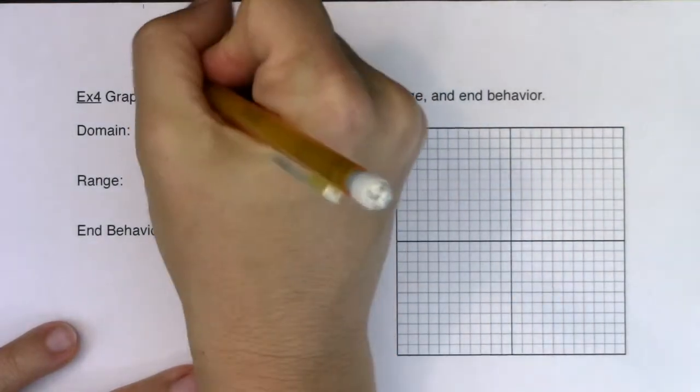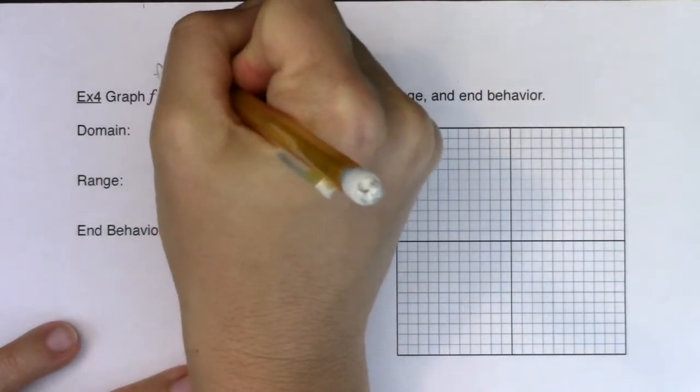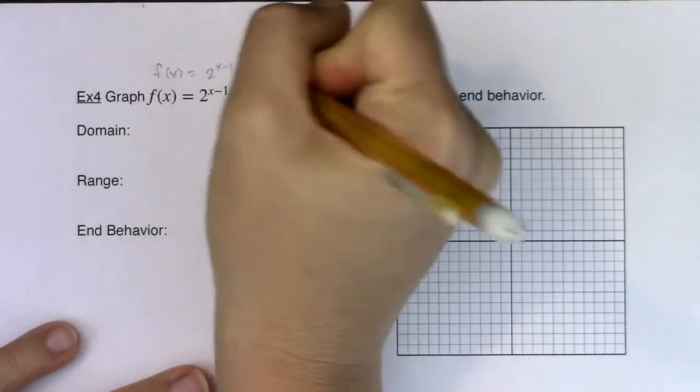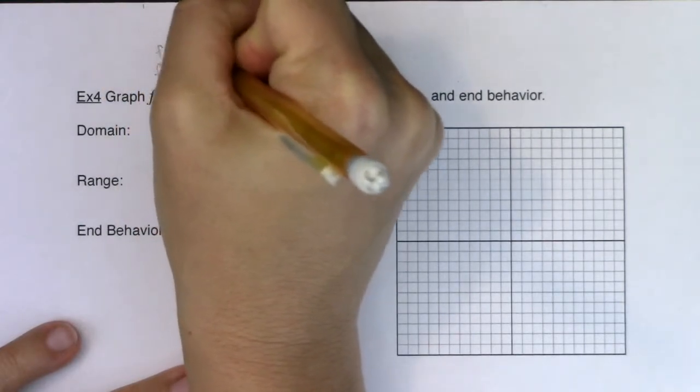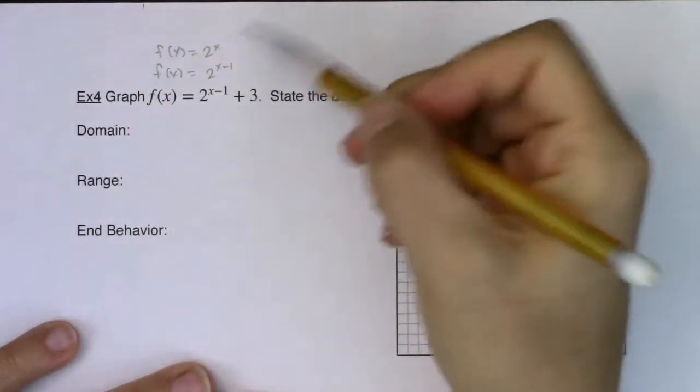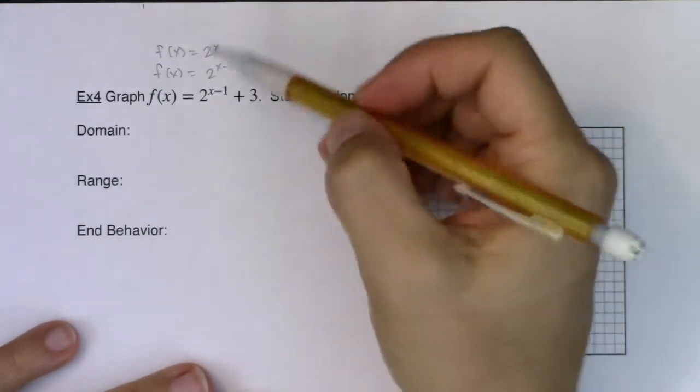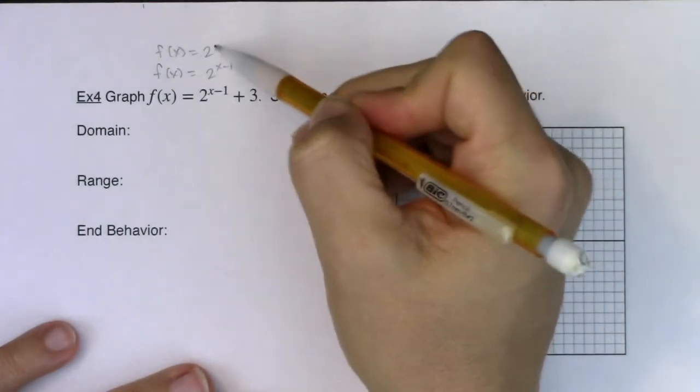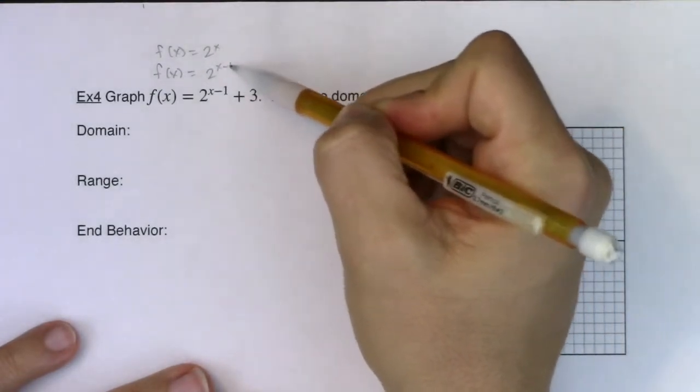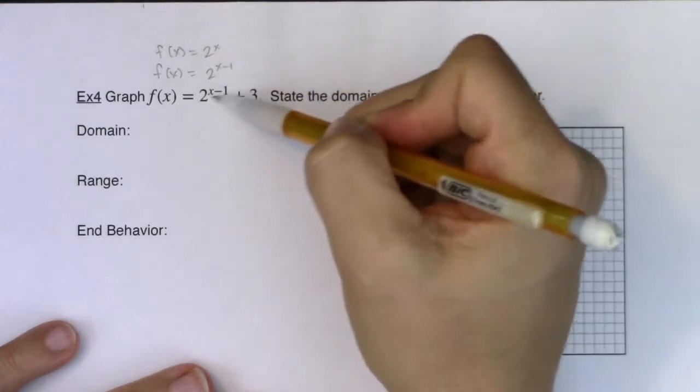If you remember from example 3, we had graphed 2 to the x minus 1, right? And then before that we had even graphed 2 to the x. So we've been progressing through these different types of exponential functions. So we remember from example 2 to 3, I shifted 1 unit right. I'm still going to do that.